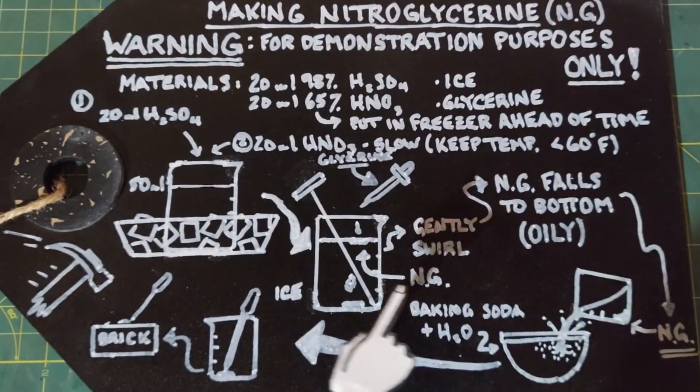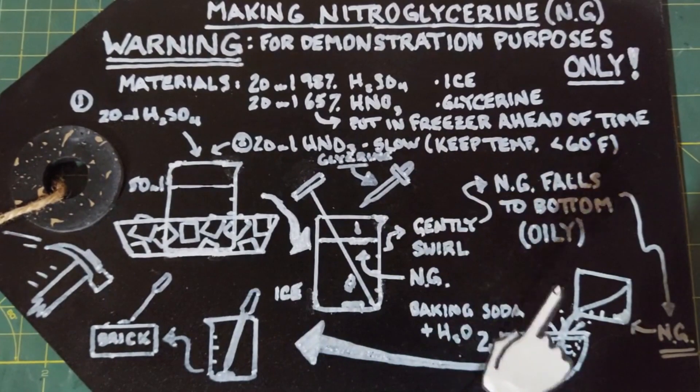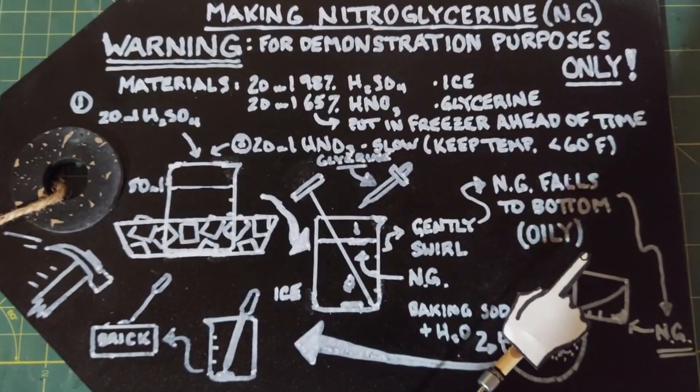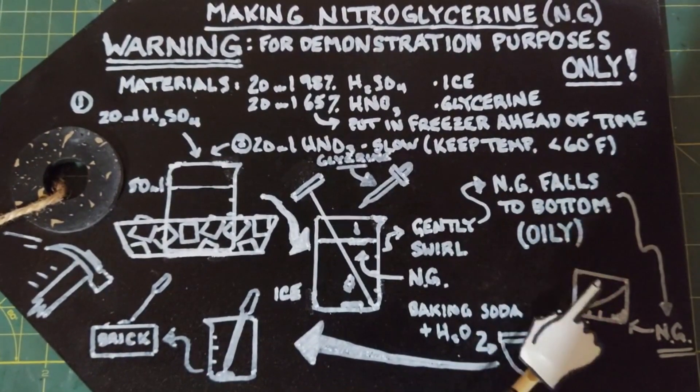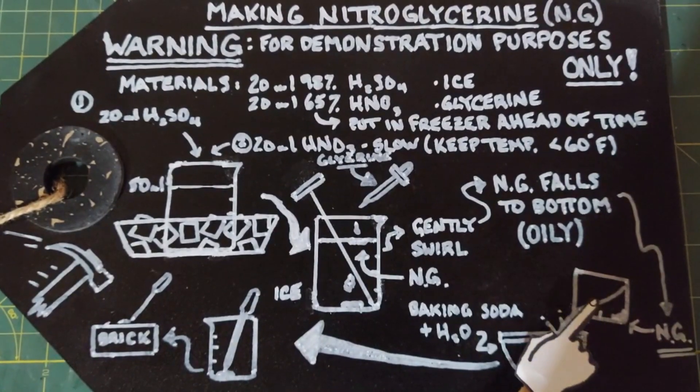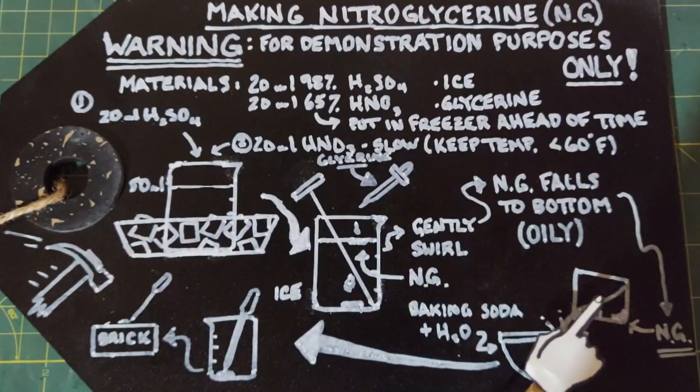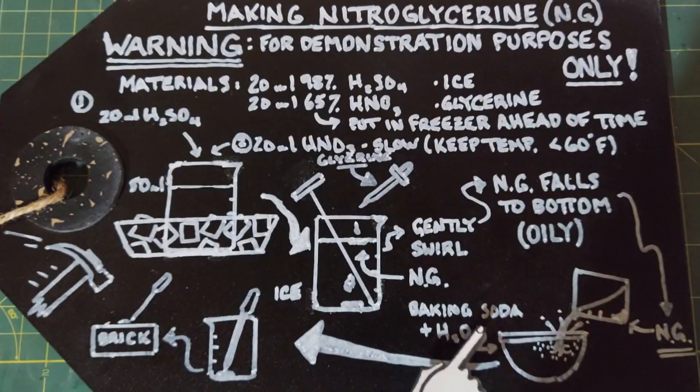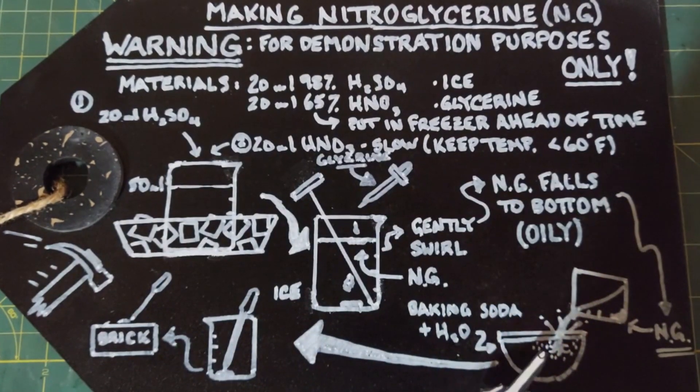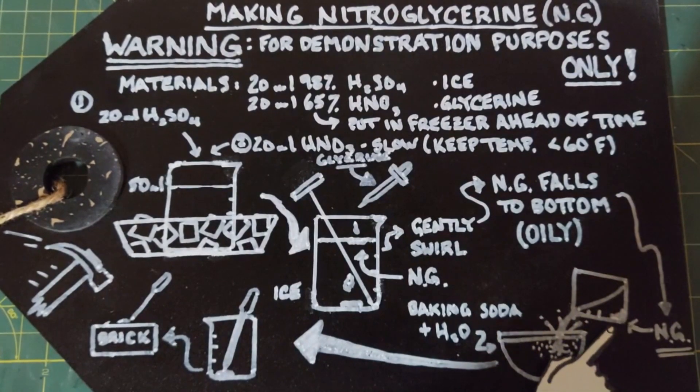Don't forget this is all done with ice around the beaker here to keep it chilled. Once you have added your few drops of glycerin and swirled this around, let it sit for just a couple of minutes and then you will notice that most of this collects on the bottom on one side here and you can decant the rest of the solution which is all acid basically into baking soda and water. Neutralize all the acids and leave just the nitroglycerin on the bottom here.